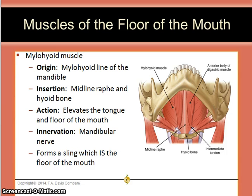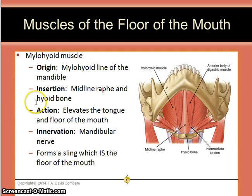Every muscle has an origin and an insertion. The origin is the fixed attachment while the insertion moves when the muscle contracts. Most muscles are named based on their origins and insertions. The origin of the mylohyoid muscle is the mylohyoid line of the mandible, and the insertion is the midline raphe and the hyoid bone. The action of the mylohyoid muscle is to elevate the tongue and the floor of the mouth. It forms a sling which is the floor of the mouth.